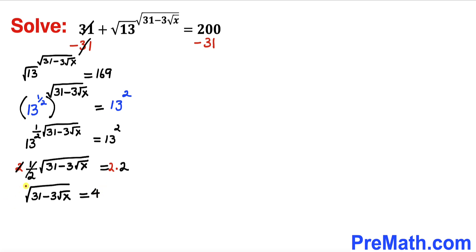Now I am going to undo this square root by squaring both sides of the equation. The square and square root undo each other, so we get: 31 minus 3 times square root of x equals 16 on the right hand side.